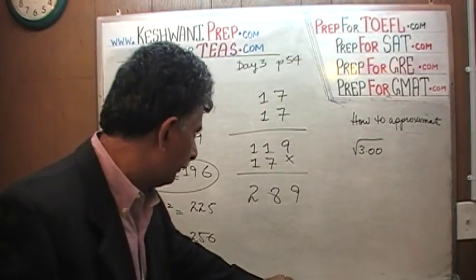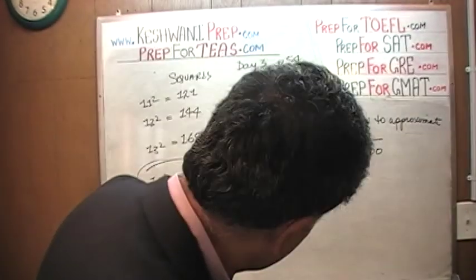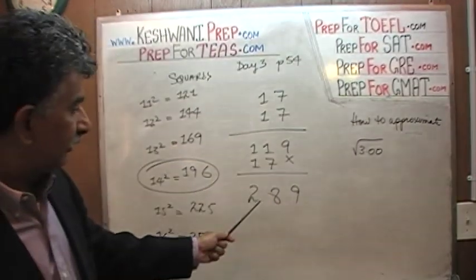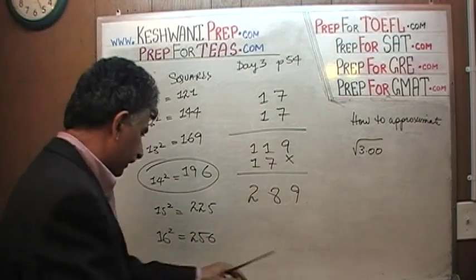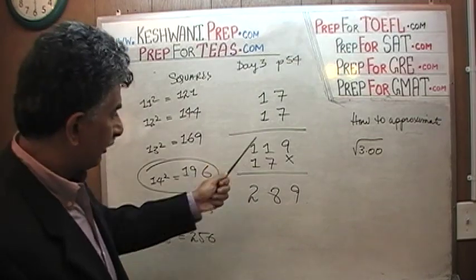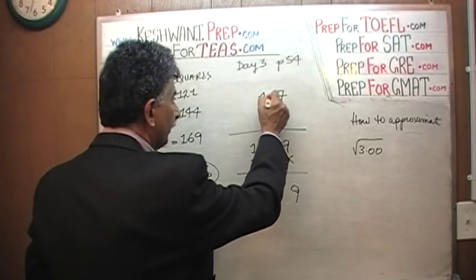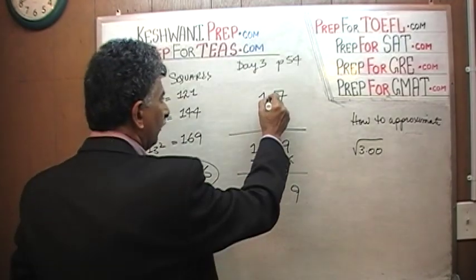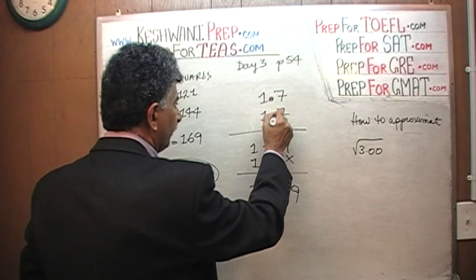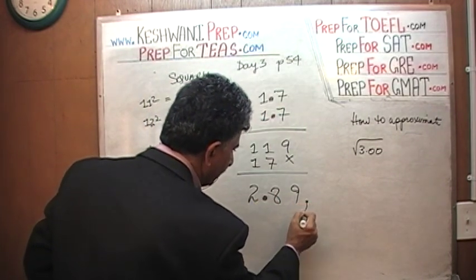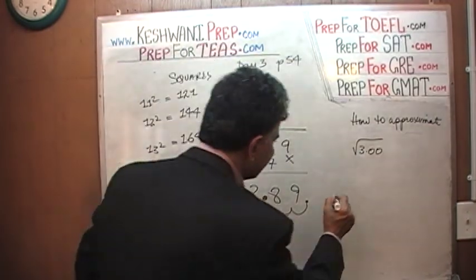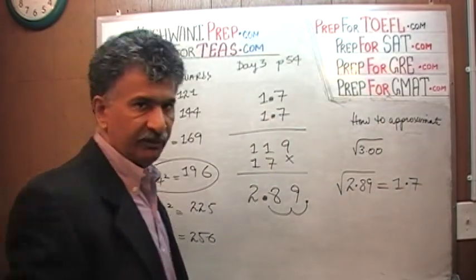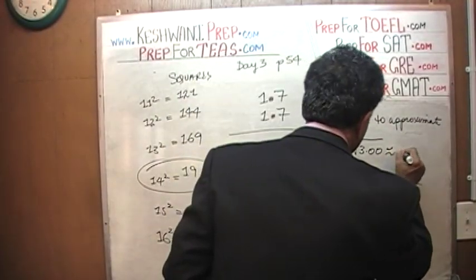What we notice is that if 17 times 17 is 289, then 1.7 times 1.7 must equal 2.89, because we take our decimal and move it two places. That means the square root of 2.89 is exactly equal to 1.7 — that is an exact quantity. Therefore, the square root of 3 is approximately 1.7.